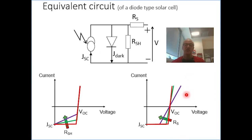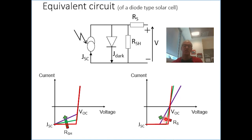The effect of having these two resistances in the equivalent circuit on the JV function of the cell is shown here. On the left is the effect of the parallel resistance and on the right is the effect of the serial resistance. We can see that the serial resistance can really reduce the maximum power we can extract from the cell.